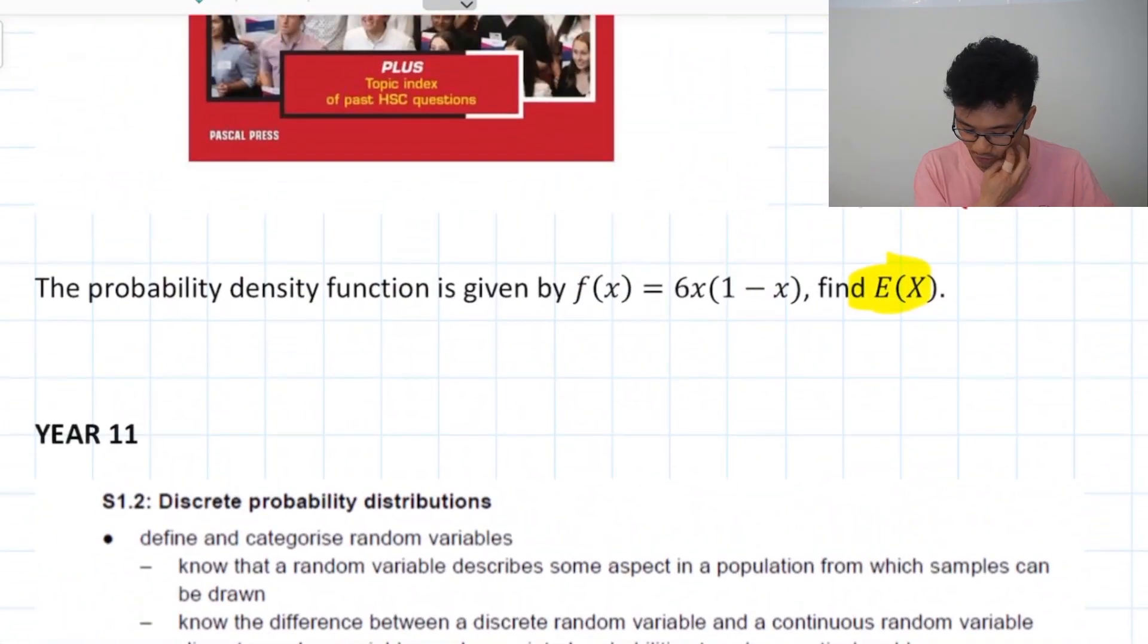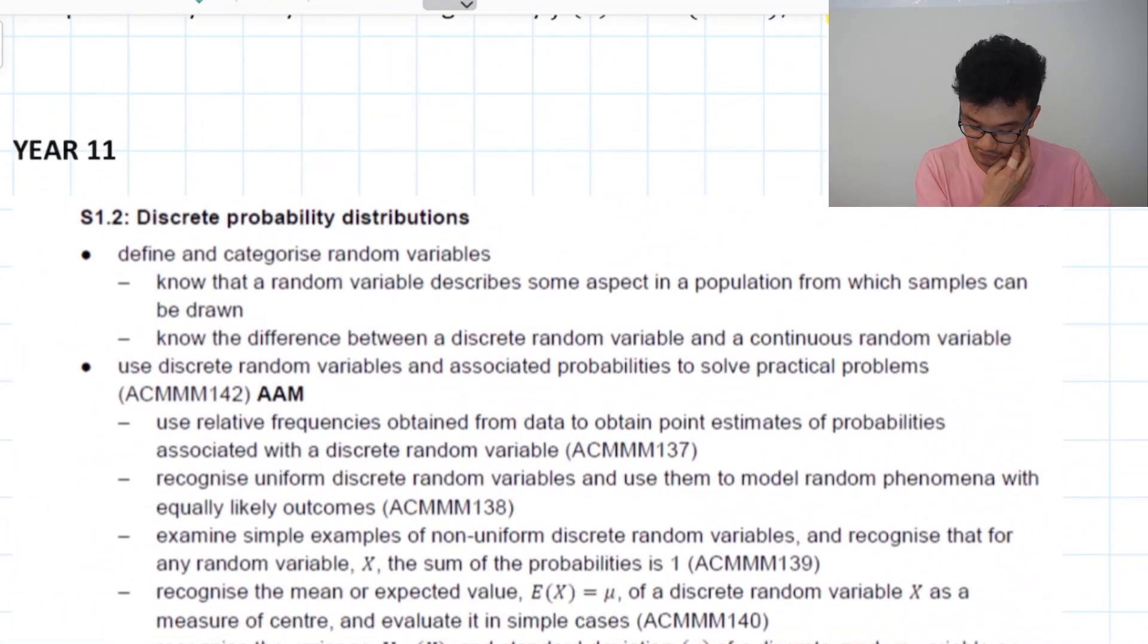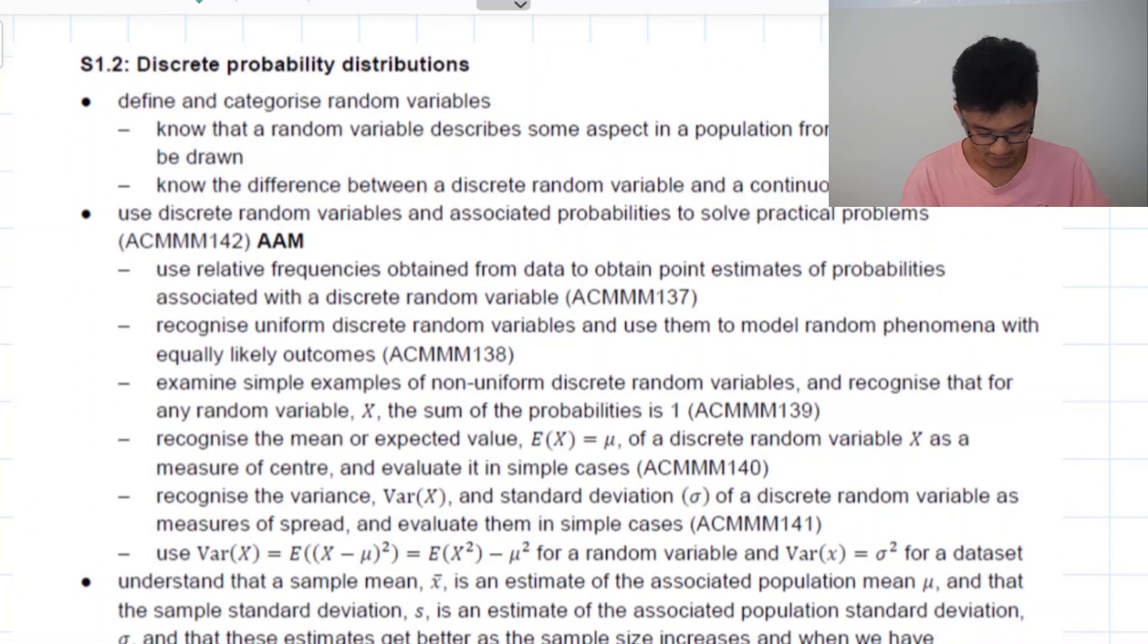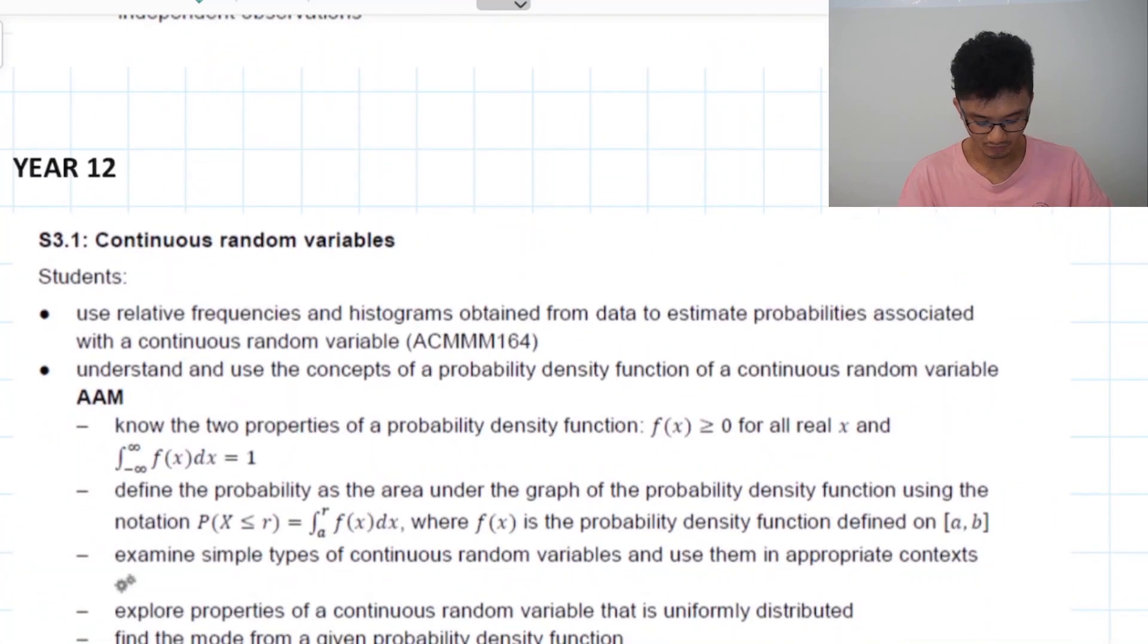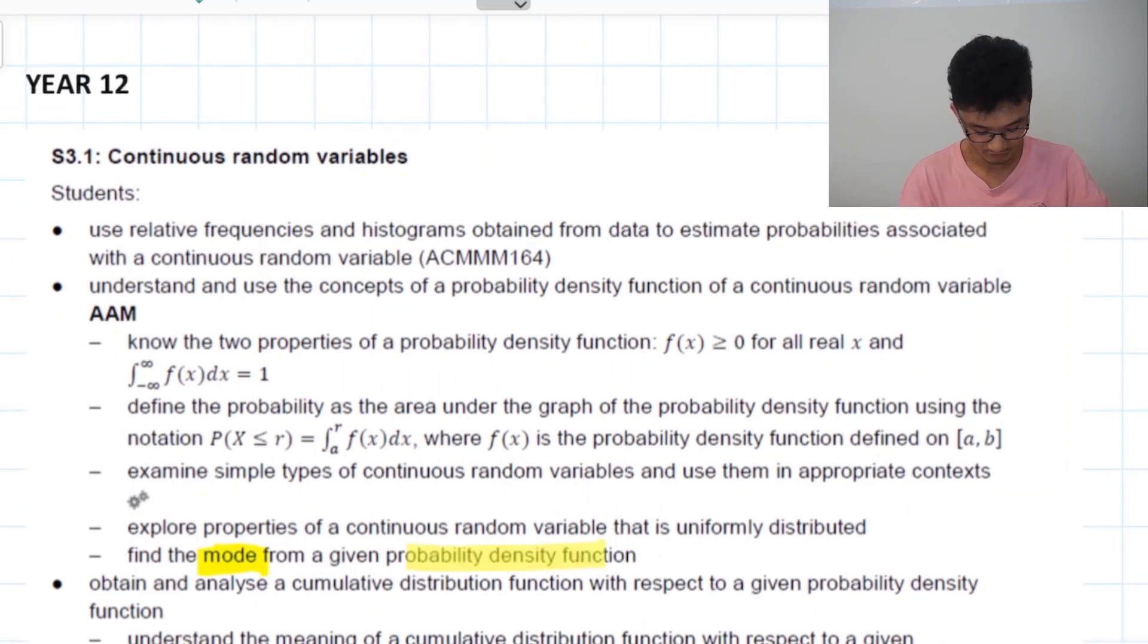But the question here find E(X). Well in year 11 you are asked to find the expected value or the variance of these discrete probability distributions but in year 12 it makes no mention of it. You look at the dot points it says okay you need to be able to find the mode for density function and then find the cumulative distribution function and find the median and other percentiles but no mention of the mean and variance for those ones.